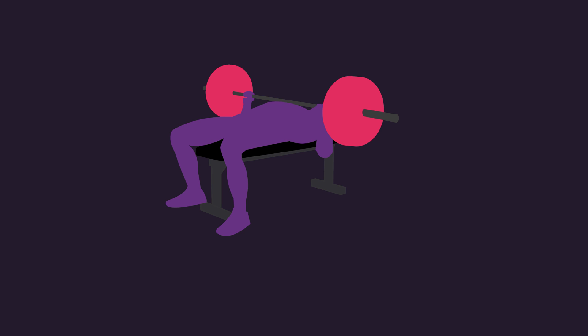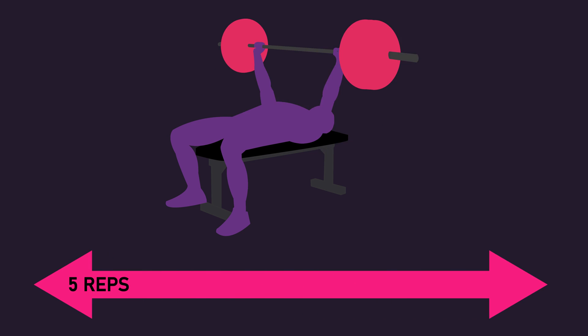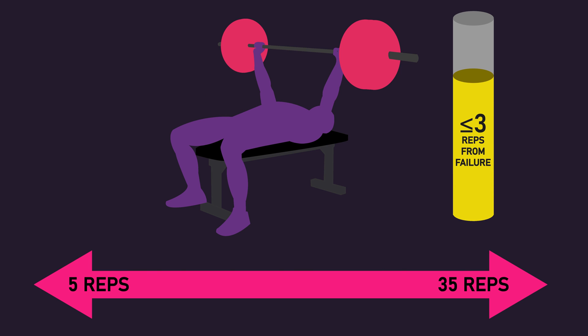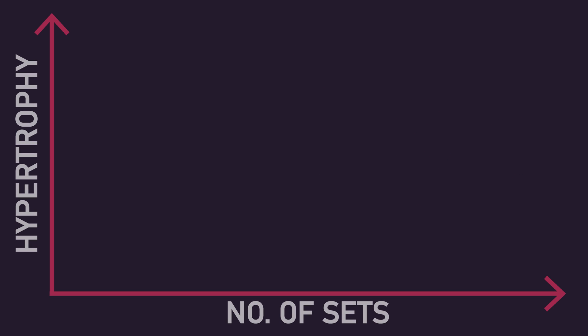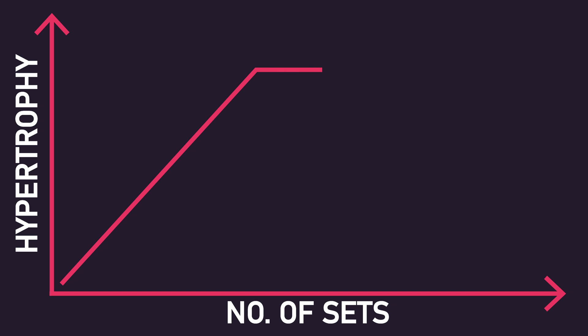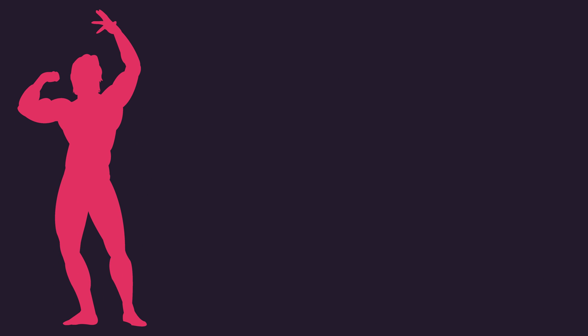More precisely, a set would probably be defined as a bout of repetitions between 5 and 35 performed 3 or fewer repetitions from the point of failure. Next video, we'll be attempting to uncover the precise relationship the number of sets you perform has with muscle hypertrophy. We'll be aiming to answer questions such as: do more sets always equal more hypertrophy? Is there a point where more sets provide no further benefit for muscle hypertrophy, or even a point where more sets actually reduces hypertrophy?